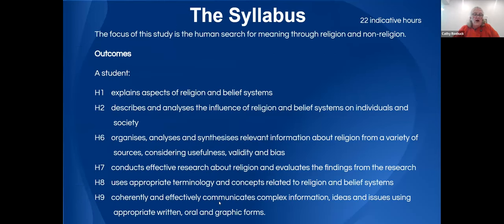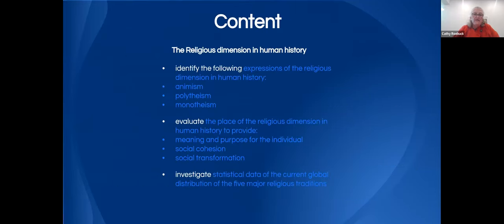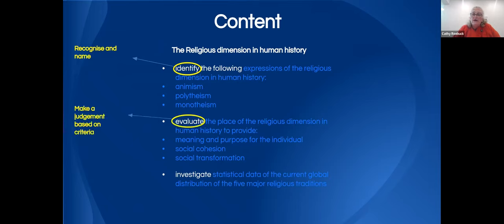Looking at the content statements, the first major heading is the religious dimension in history, where we're asked to identify expressions such as animism, polytheism and monotheism. 'Identify' means recognising them, naming them, and giving a few features. We're also asked to evaluate the significance of the religious dimension in human history, making judgements about whether religion has provided meaning and purpose, social cohesion and social transformation.